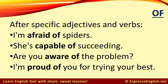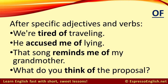Finally, we use of after some specific adjectives and verbs. There is no rule here — you just need to remember each one. Here are a few examples, though this is not a complete list: I'm afraid of spiders. She's capable of succeeding. Are you aware of the problem? I'm proud of you for trying your best. We're tired of traveling. He accused me of lying. That song reminds me of my grandmother. What do you think of the proposal?